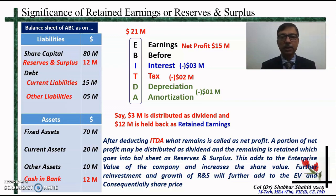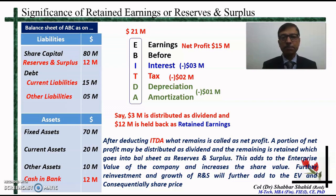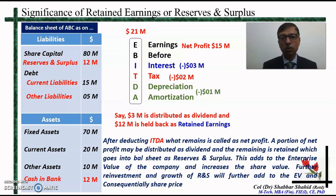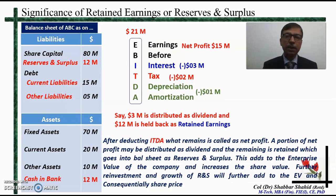Now, what is the significance of reserves and surplus? Why should a company retain some of the profit as retained earnings? That is because the company can make better use of that money for the purpose of growth, diversification, and expansion, and in the process generate more profit than what the shareholder would have done with that money had it gone to them as dividend. Normally, when a shareholder receives a dividend, they would either spend it or not be able to utilize it in as profitable a manner as the company can.